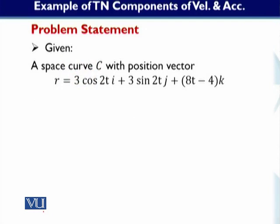The given information is that we have a curve C and the position vector R is equal to 3cos(2t)i plus 3sin(2t)j plus (8t minus 4)k. We have a three-dimensional space. The position vector has a first component which is the i component, a second component which is the j component, and a third which covers the x, y, and z components.